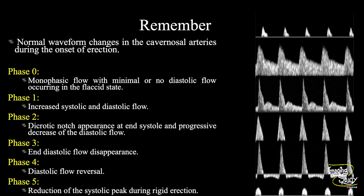The take-home message: the normal cavernosal artery waveform changes through 6 phases during erection. First, monophasic flow in the flaccid state with no diastolic component. Then increased diastolic flow. Then a notch appears at the end of systole. We observed almost all these waveforms in this case, but it stopped at phase 2. For normal rigid erection, the outflow of the emissary veins stops, end-diastolic flow disappears and then reverses, and finally the systolic peak reduces — none of which we saw here.